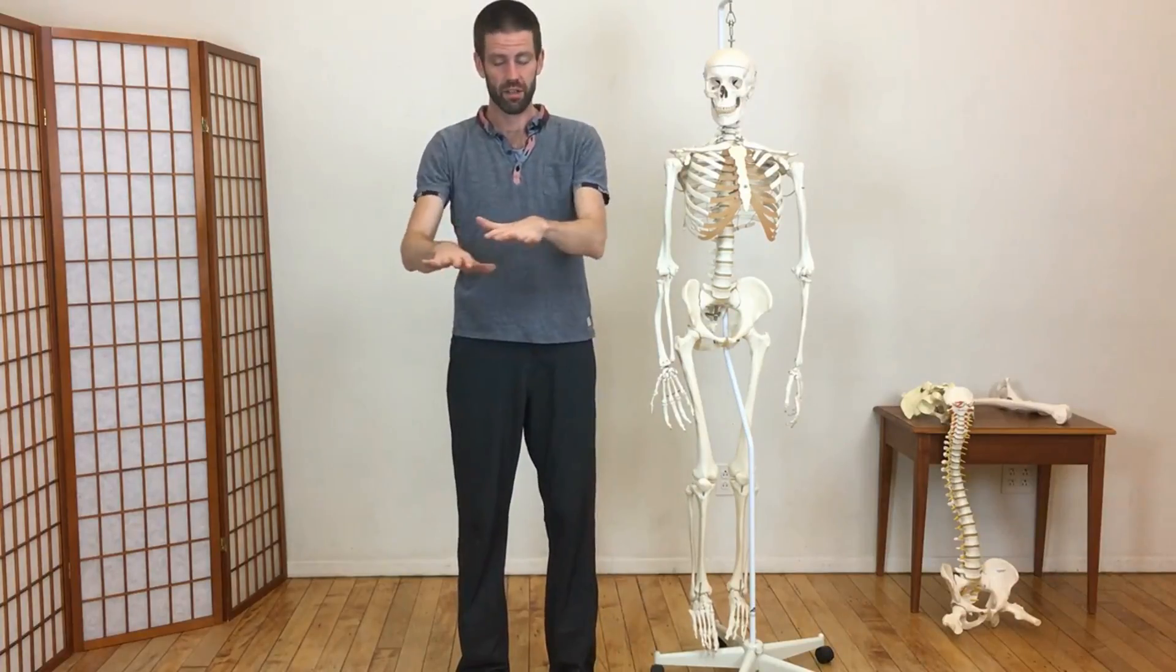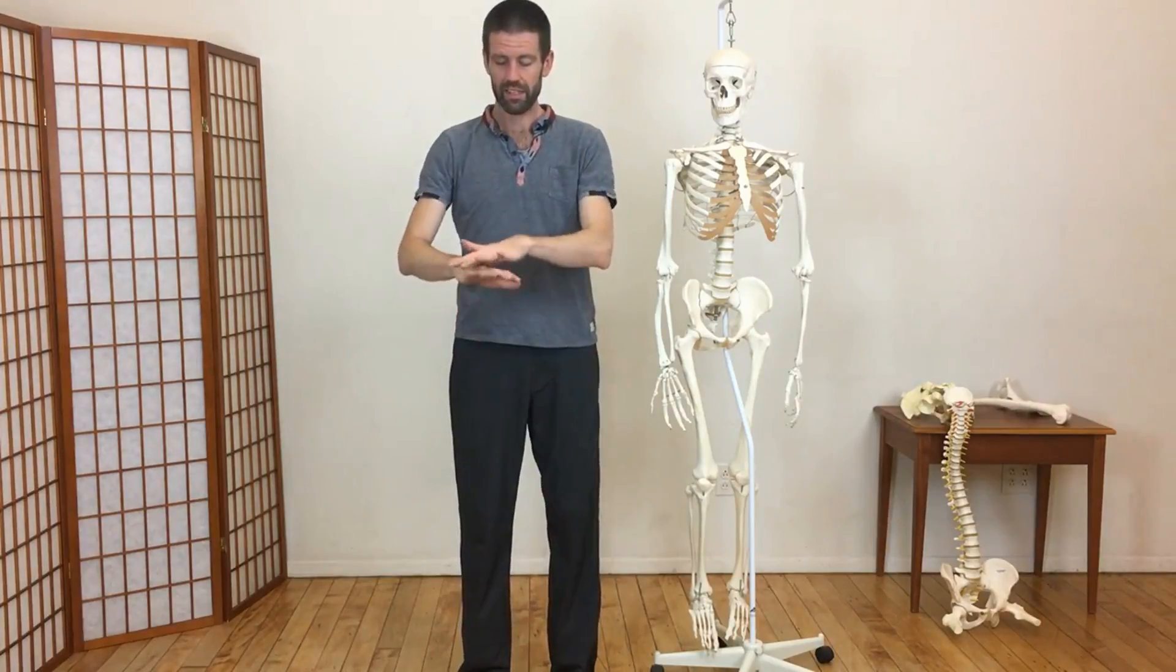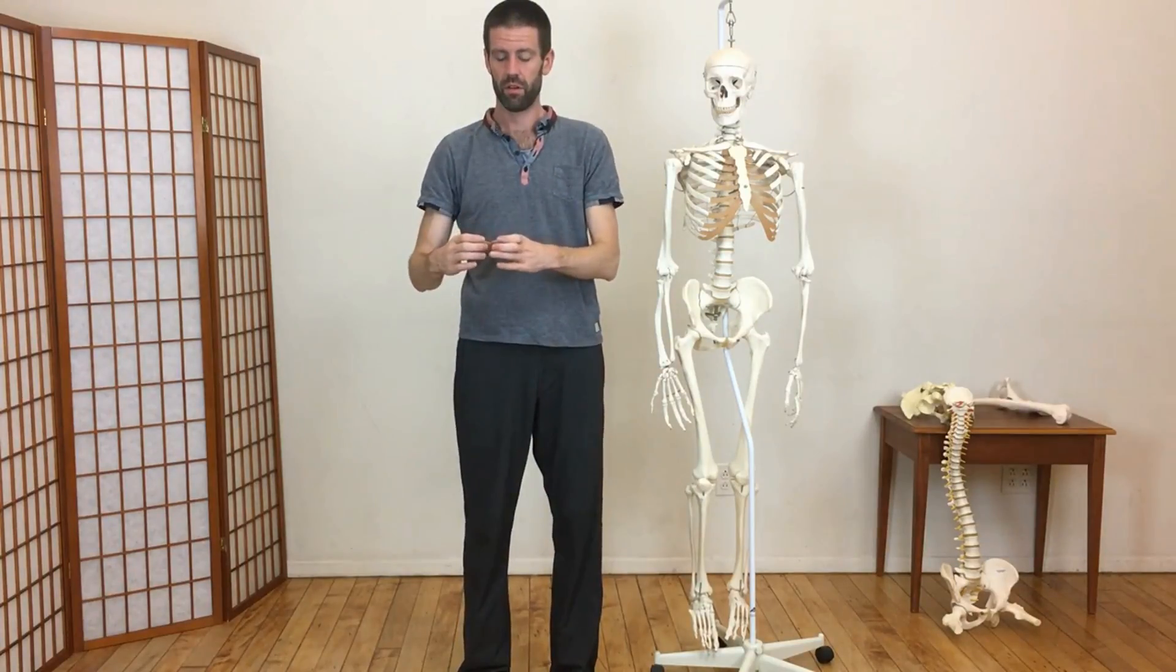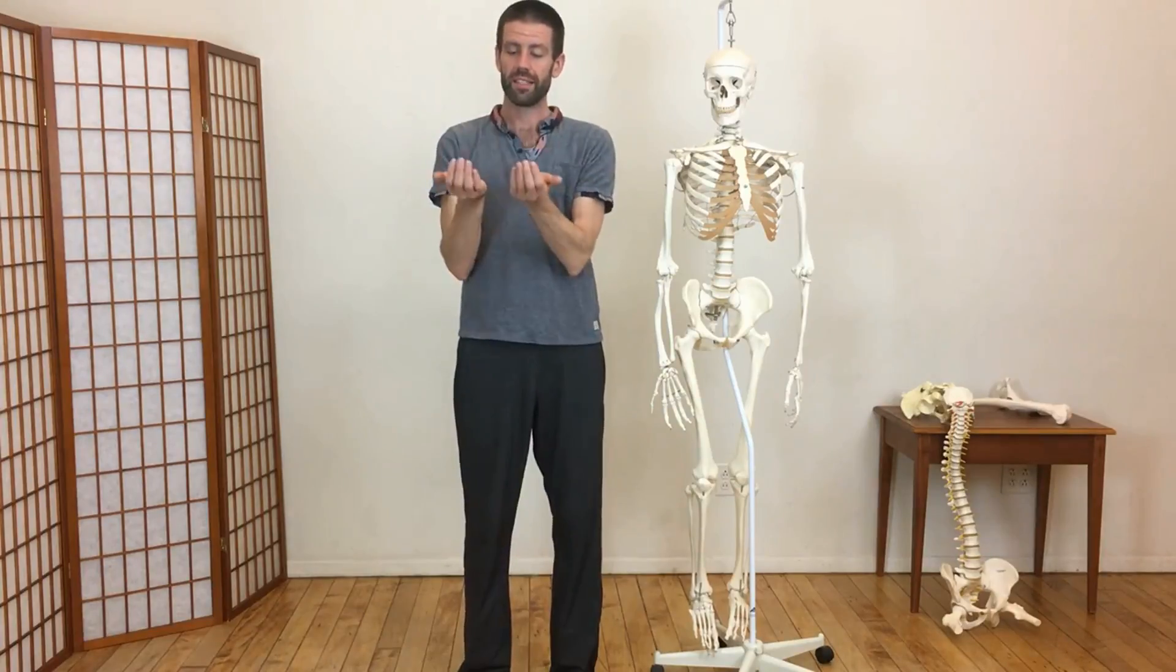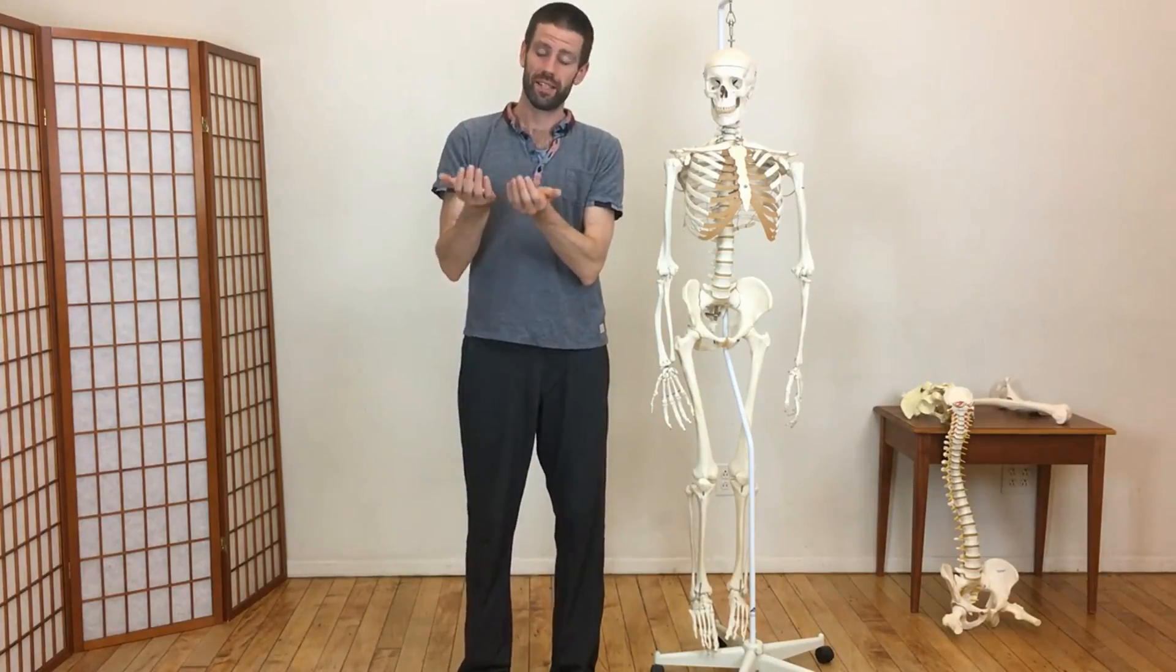So now I imagine the tibial plateau again. And then those two horseshoe-shaped condyles. So you remember which one is bigger. It's the one on the inside, a little bit bigger, resting on the tibial plateau. And then you rest the condyles of the femur inside those.